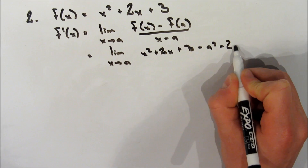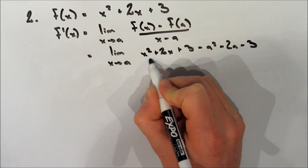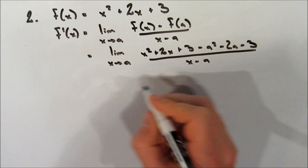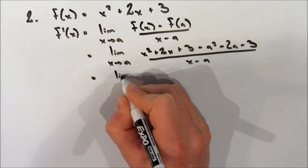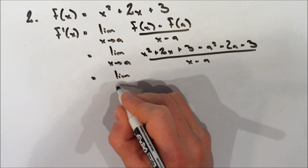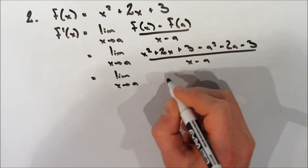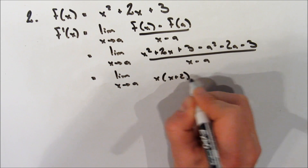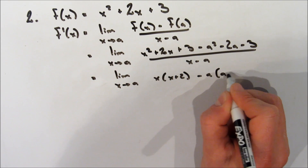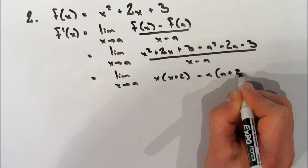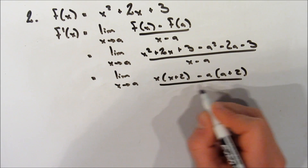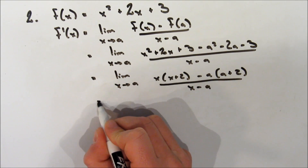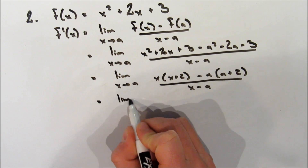And we're going to subtract f(a), which we just sub in a everywhere there's an x in the function. All of this is going to be over x minus a. Now we're left with the limit as x approaches a. We can cancel out the two threes and factor, so it's going to be x times (x plus 2) minus a times (a plus 2) over x minus a.